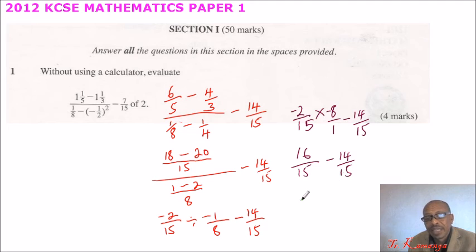And since we have the LCM is 15. This means you can write it 15. 16 minus 14 minus 14. And that will give you 2 divided by 15.